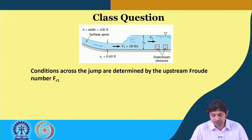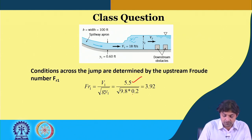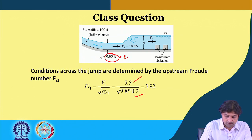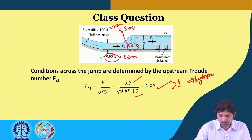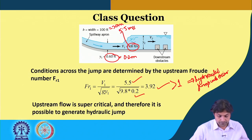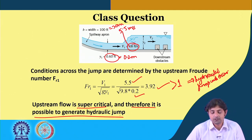In this question, the conditions across the jump are determined by the upstream Froude number Fr1, which we also have to find. Fr1 is given by V1 divided by the square root of g·y1. V1 was given as 5.5 m/s and y1 was given as 0.2 m. The Froude number Fr1 comes out to be 3.92, which is greater than 1, meaning hydraulic jump will occur. The upstream flow is supercritical and therefore it is possible to generate a hydraulic jump.